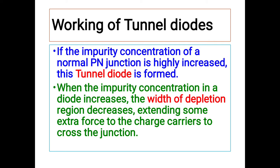If the impurity concentration of a normal PN junction diode is highly increased, then the tunnel diode is formed. When the impurity concentration in a normal PN junction diode is increased, the width of the depletion region decreases, giving extra force to the charge carriers to cross the junction. As we have studied, impurity concentration is inversely proportional to the width of the depletion region — so as impurity concentration increases, the width of the depletion region decreases.